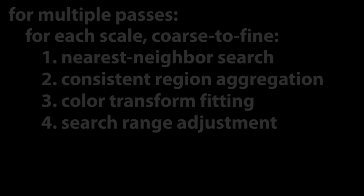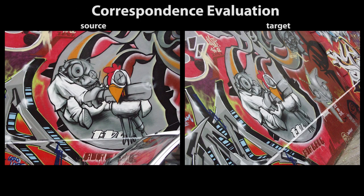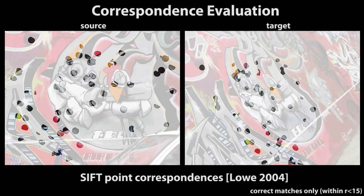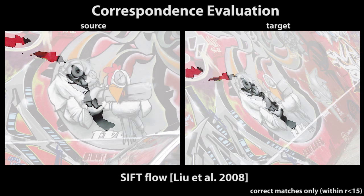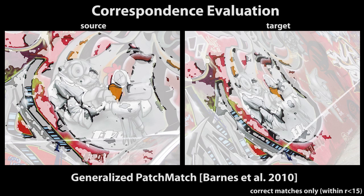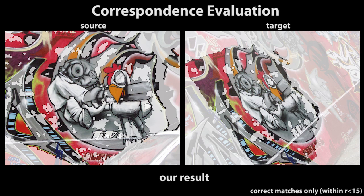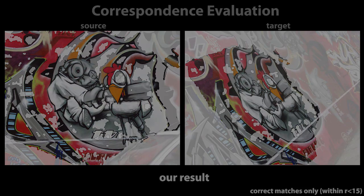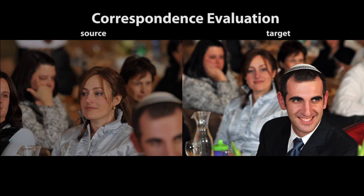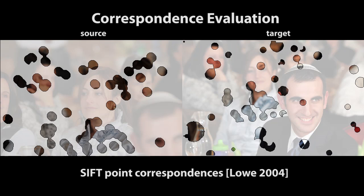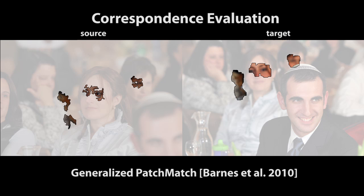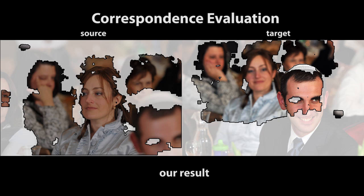We compared our method to others using a dataset with known ground truth. SIFT features are robust but too sparse for many applications. SIFT flow combines SIFT descriptors with optical flow but fails under severe distortions. Generalized patch match fails on featureless regions. Our method recovers a large fraction of the corresponding points. On real-world images with significant changes of color, focus, and pose, SIFT correspondences are often incorrect, generalized patch match produces very few useful matches, while our method produces dense correspondences with minimal outliers.